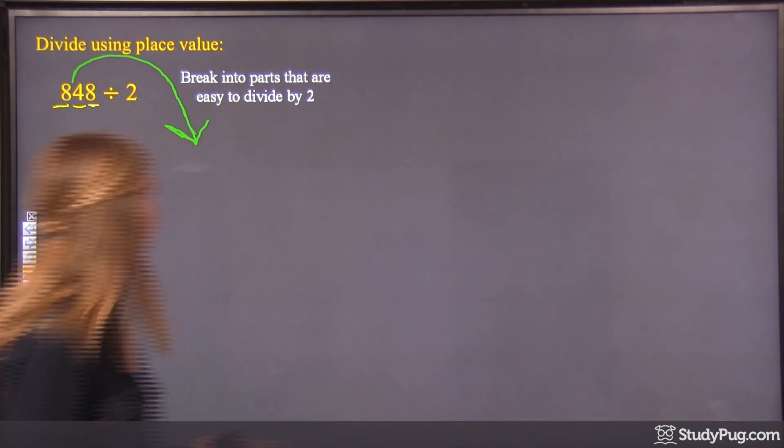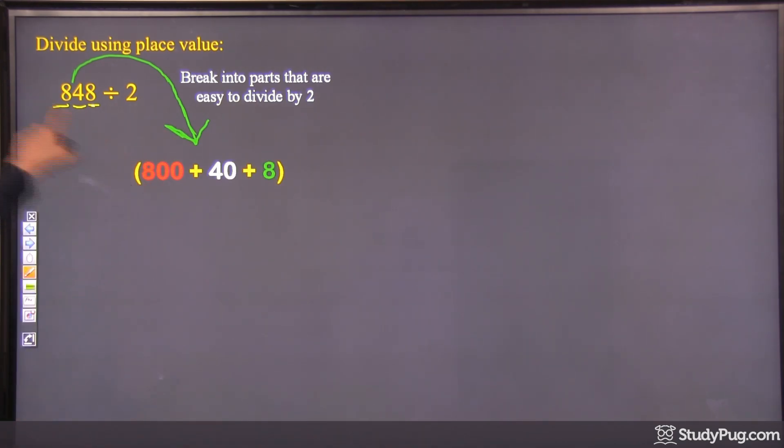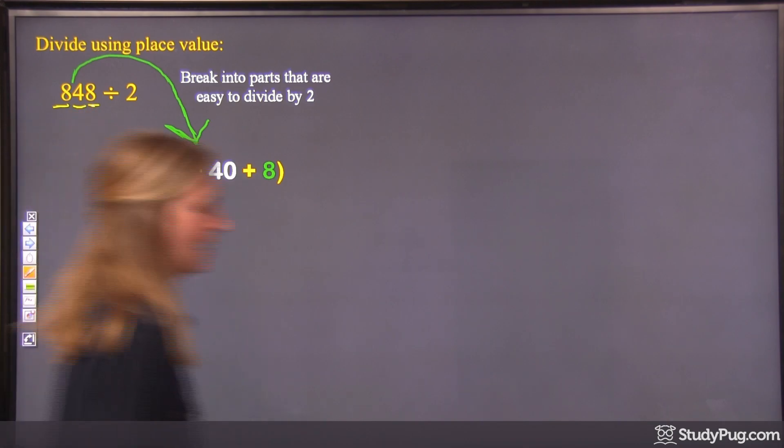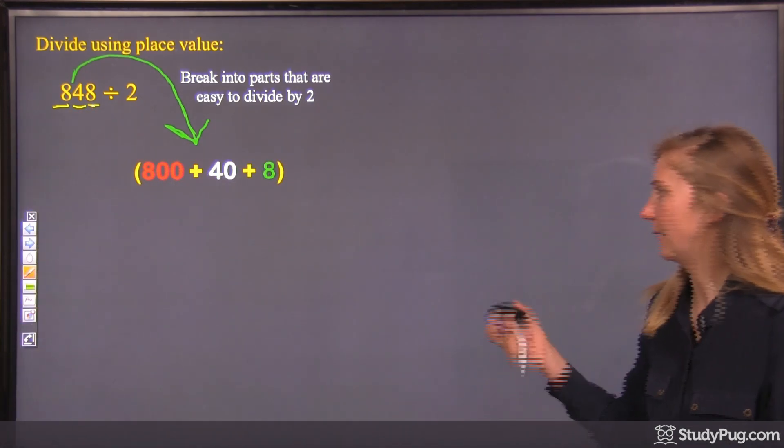So I'm going to split it up into 800, which is the 8, 40, which is the 4 in the tens place, and 8, which is the 8 in the ones place. And then that all gets divided by 2.